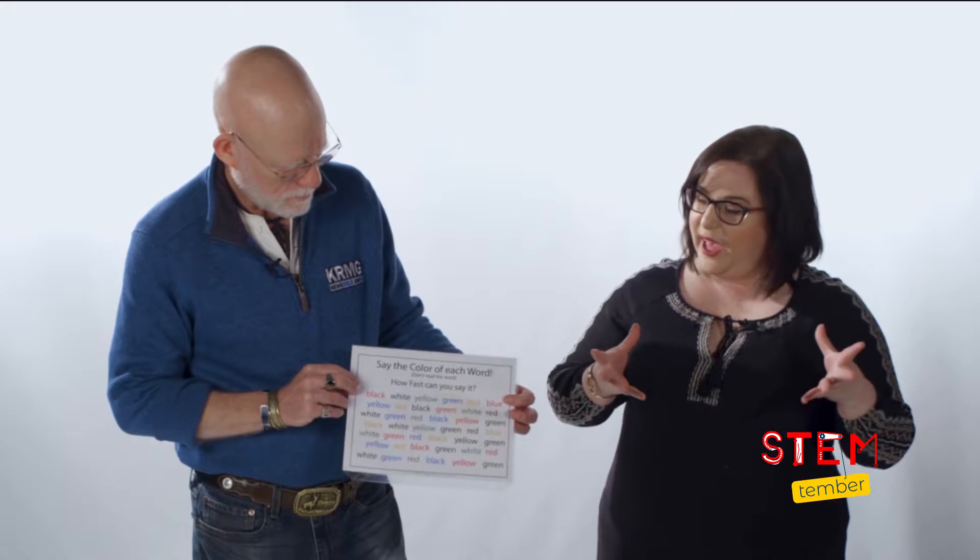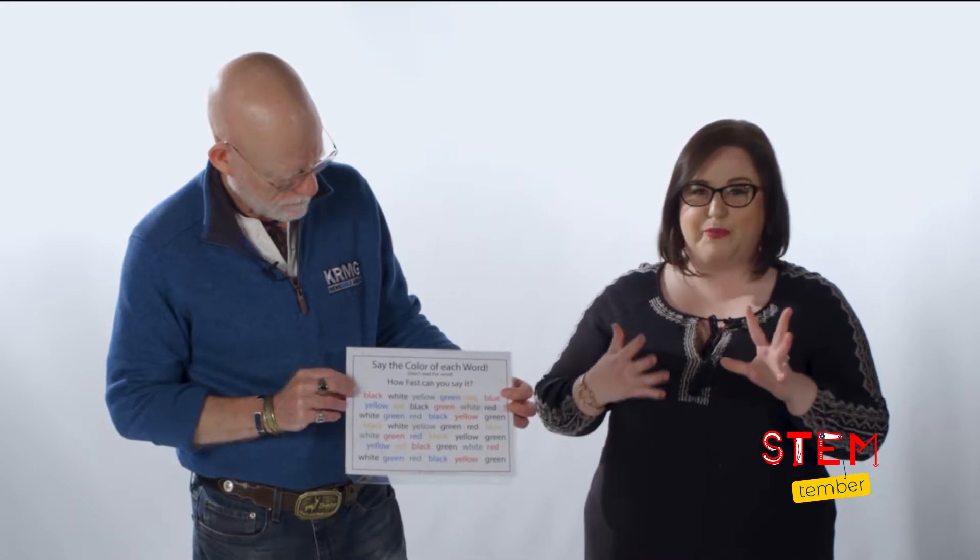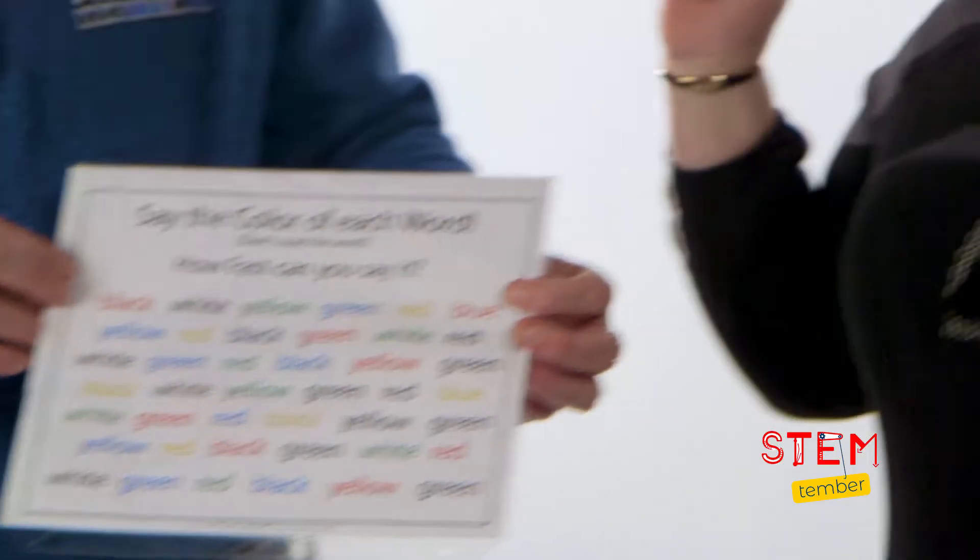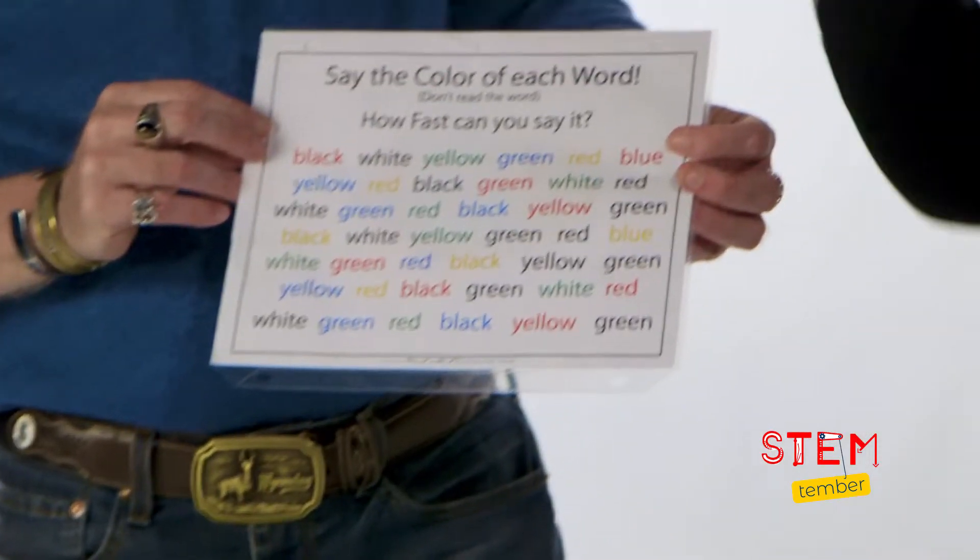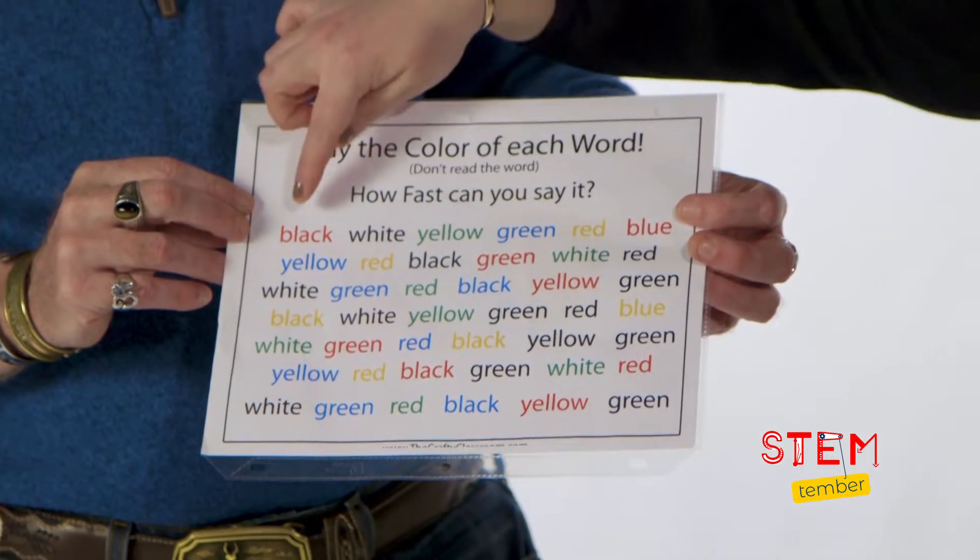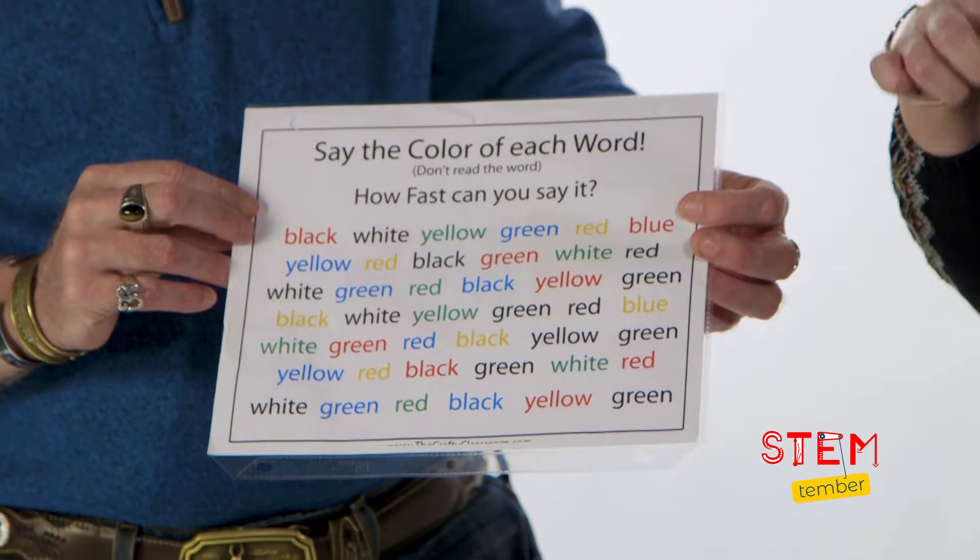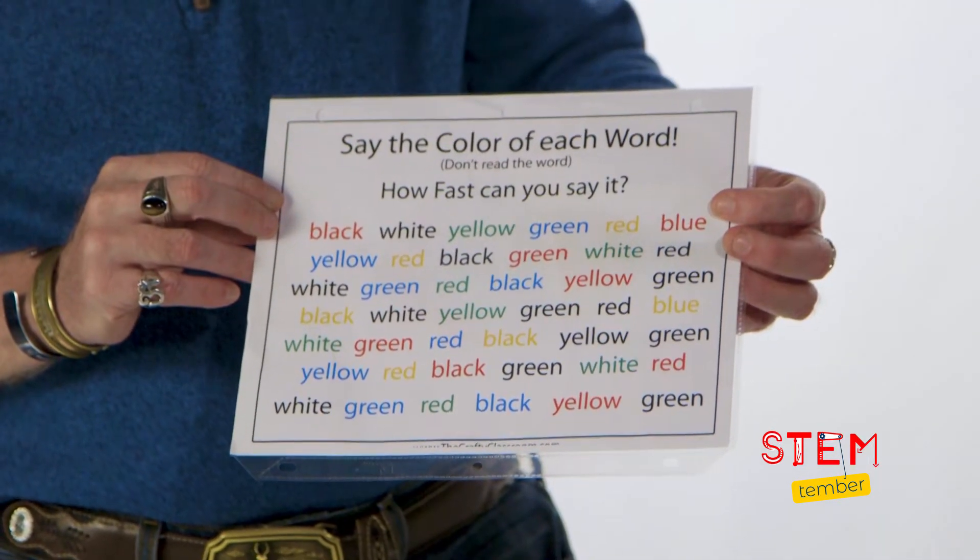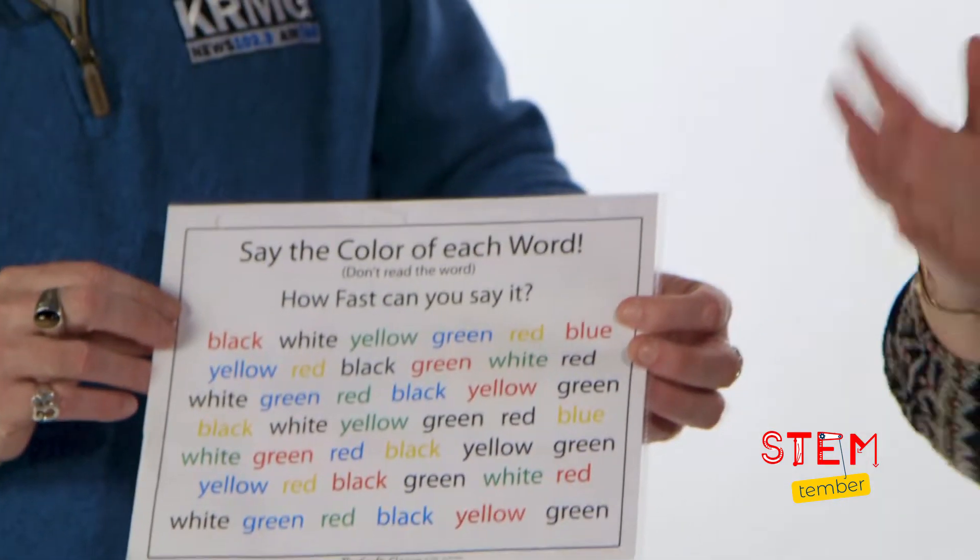So what I wanted to show you guys is how sometimes our brain can trick us a little bit. So what I'm going to go ahead and do is I'm going to make Russell say the color of each word. But as you see here, we read black, right? But the color is red.